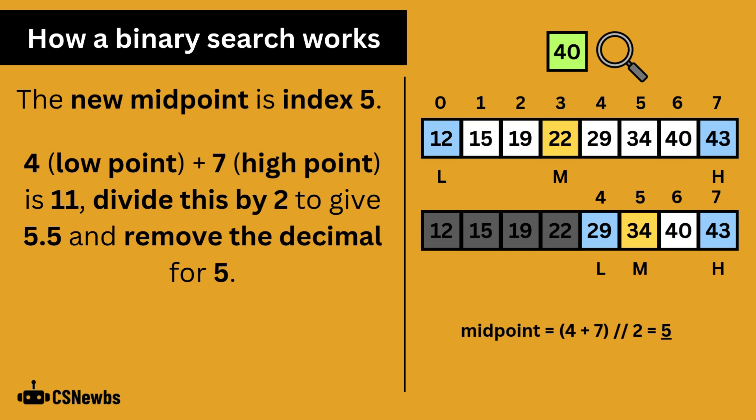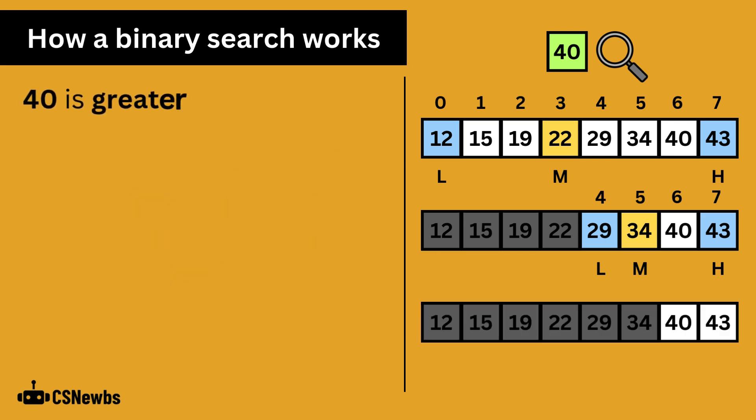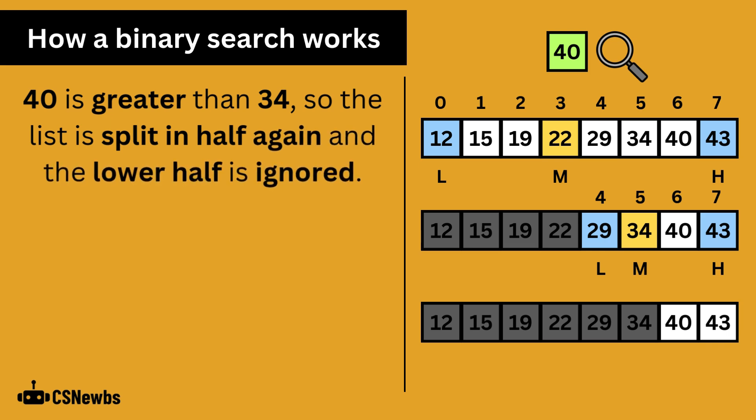Alternatively, you can see that there are 4 values remaining. Divide this by 2 and you get 2. So the midpoint is the second value along, which is 34. 40 is greater than 34, so the list is split in half again and the lower half is ignored.